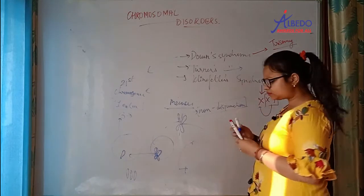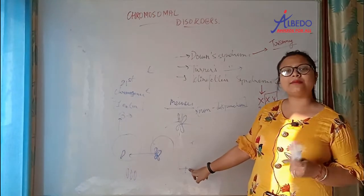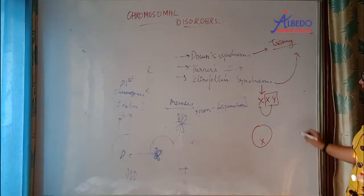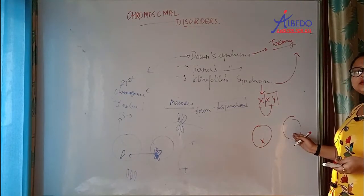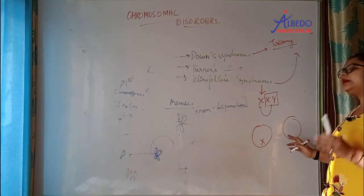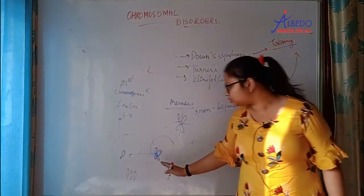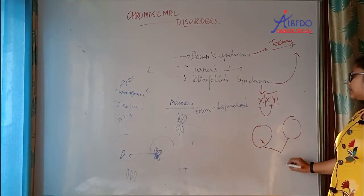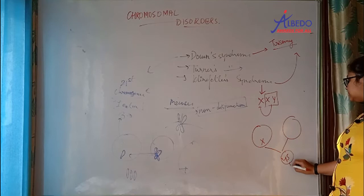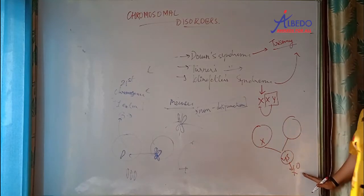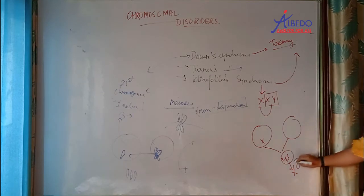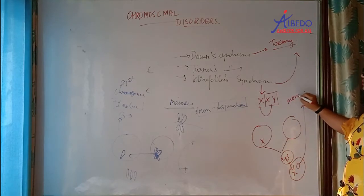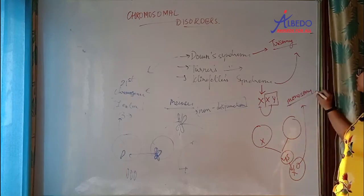And what happens in Turner syndrome? In Turner syndrome, a female has only one X chromosome — the genotype is XO, with only 45 chromosomes. Turner syndrome is an example of monosomy.